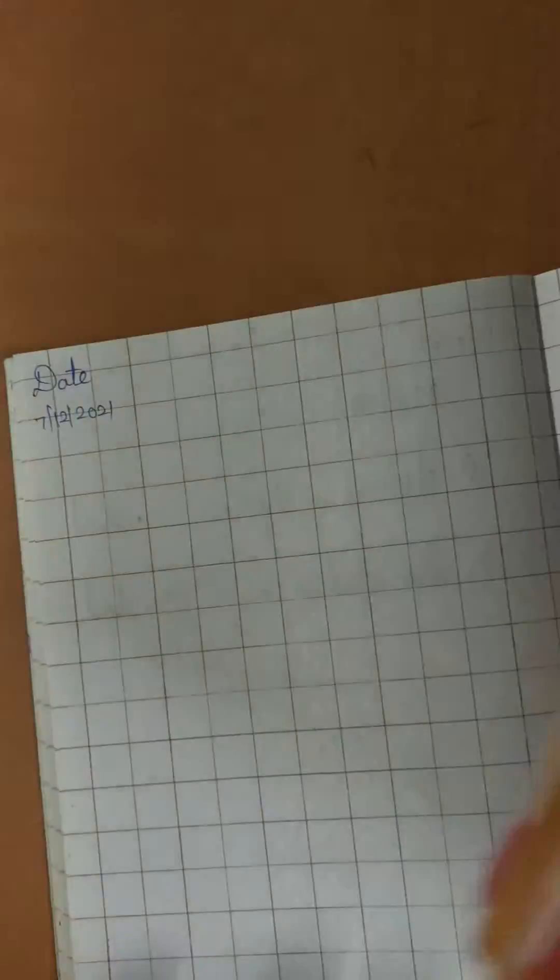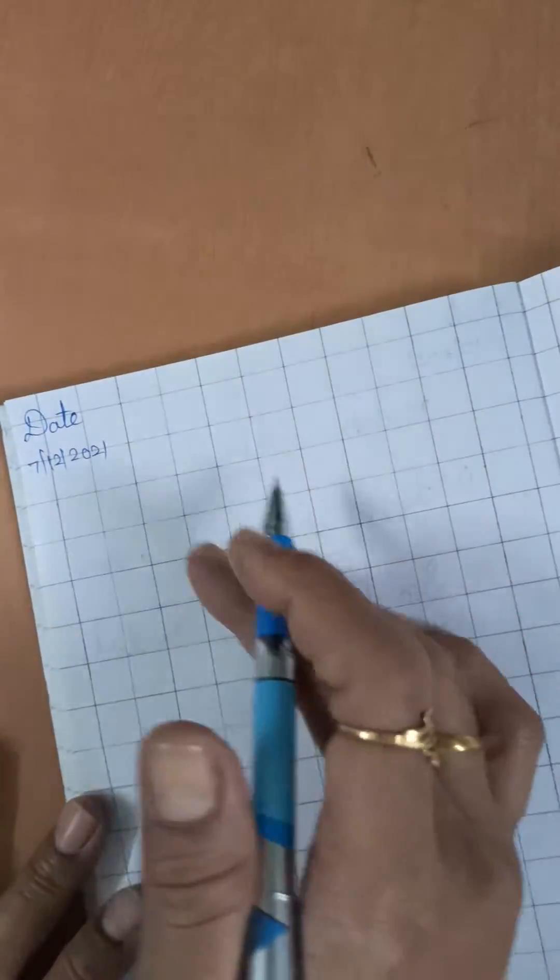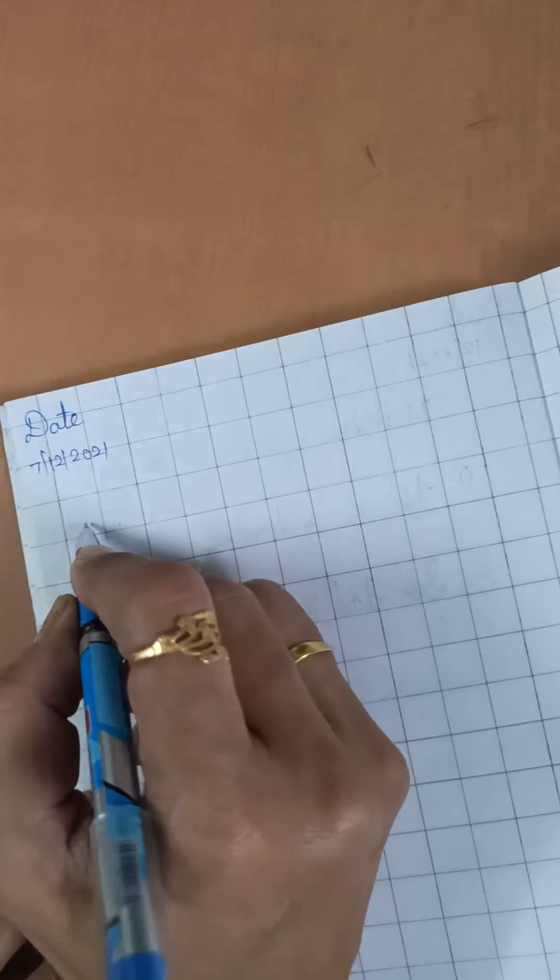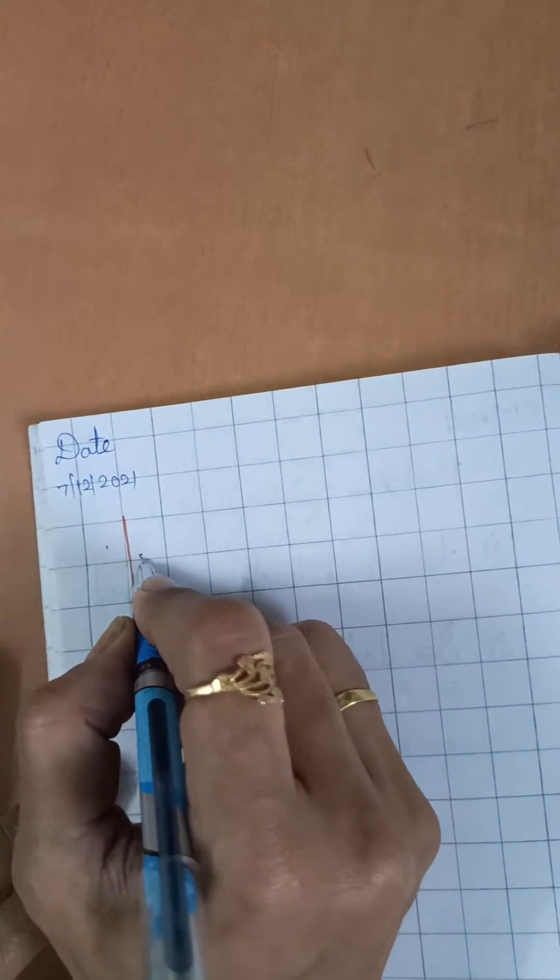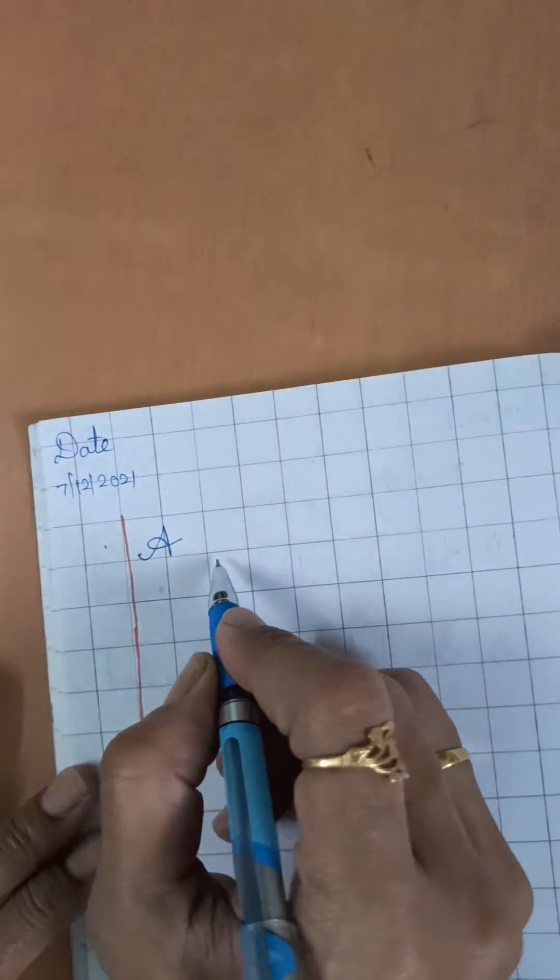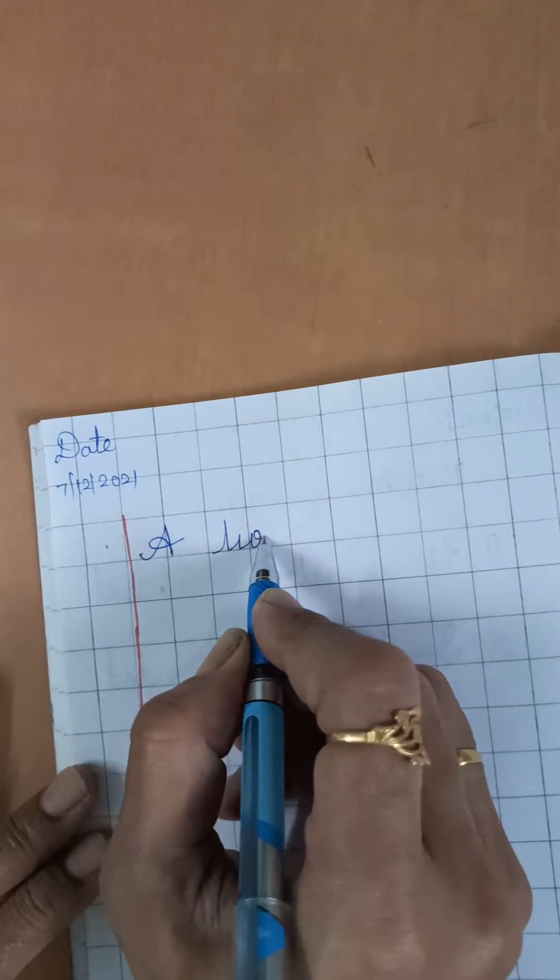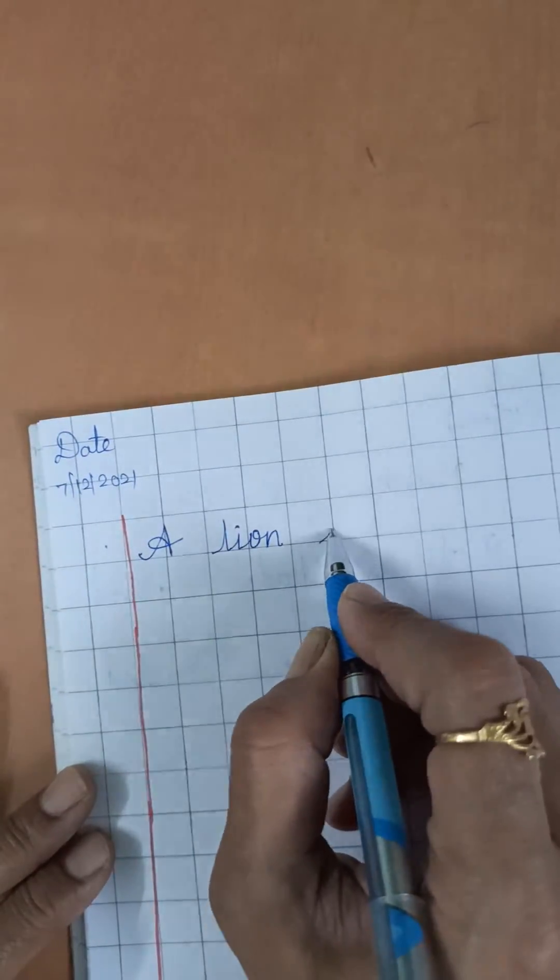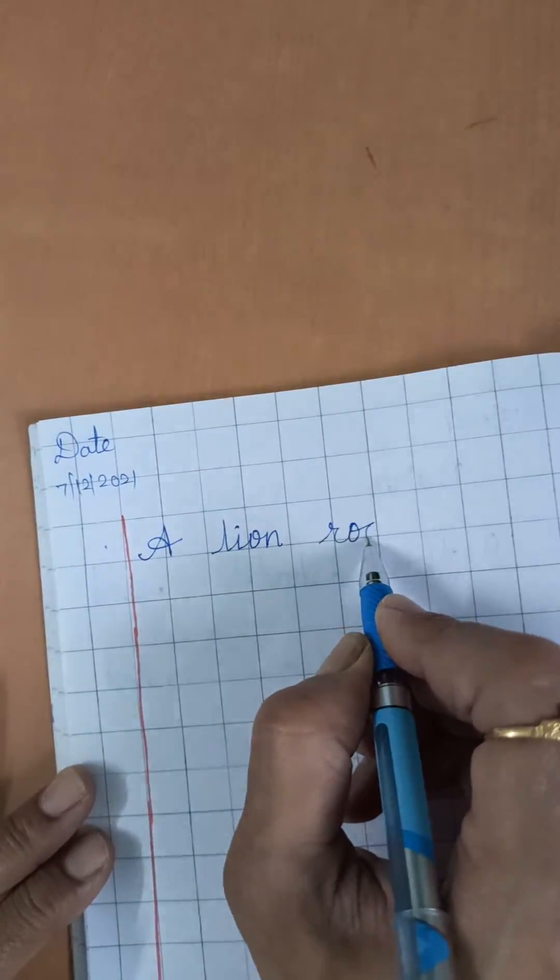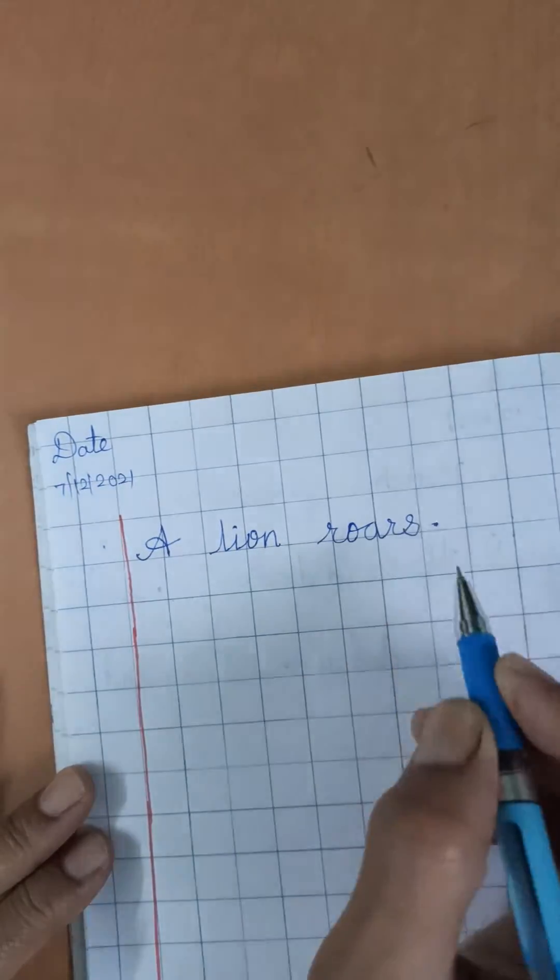Okay, let us start in writing cursive. R-O-A-R-S roars. Full stop.